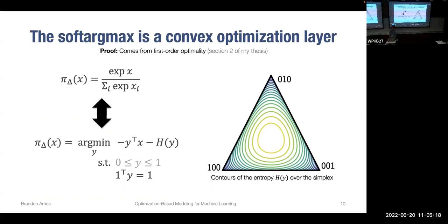A question about the form of the entropy function H: it's the discrete entropy function — the negative expected log probability of Y, which lies in the simplex.